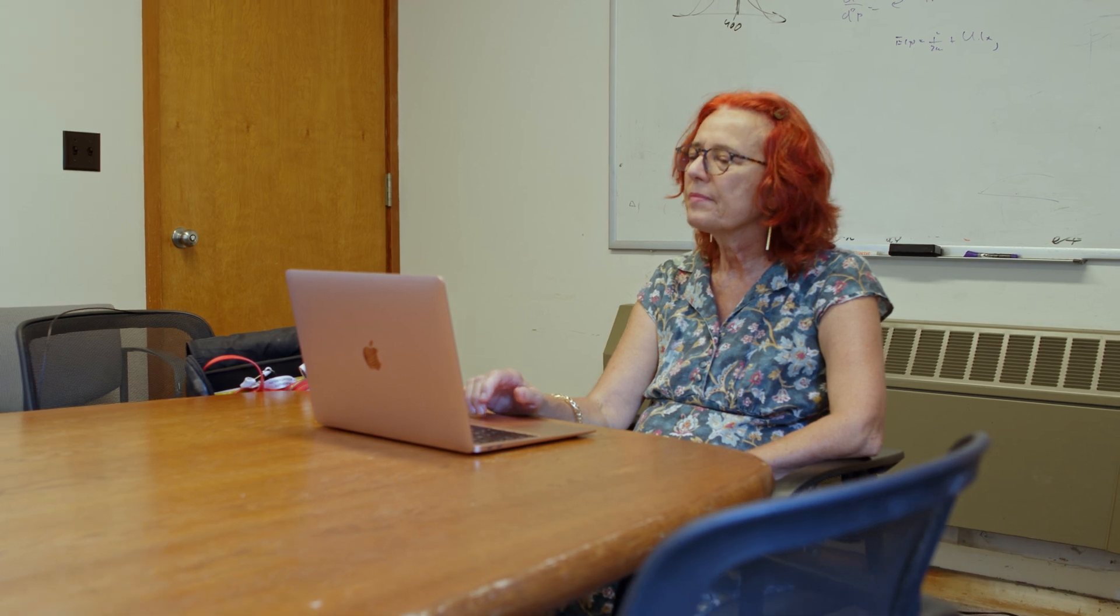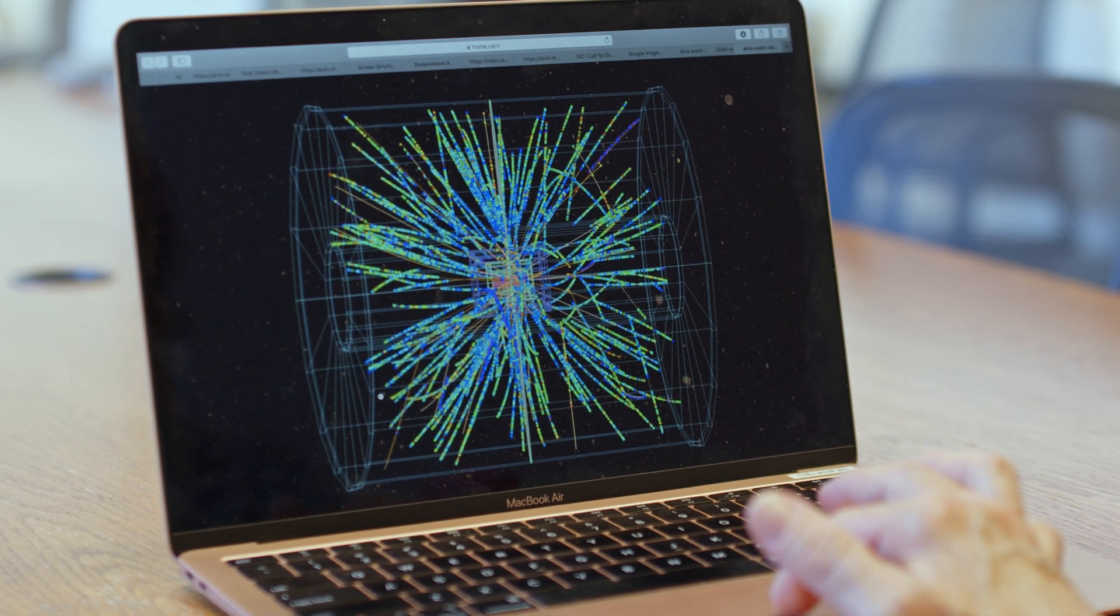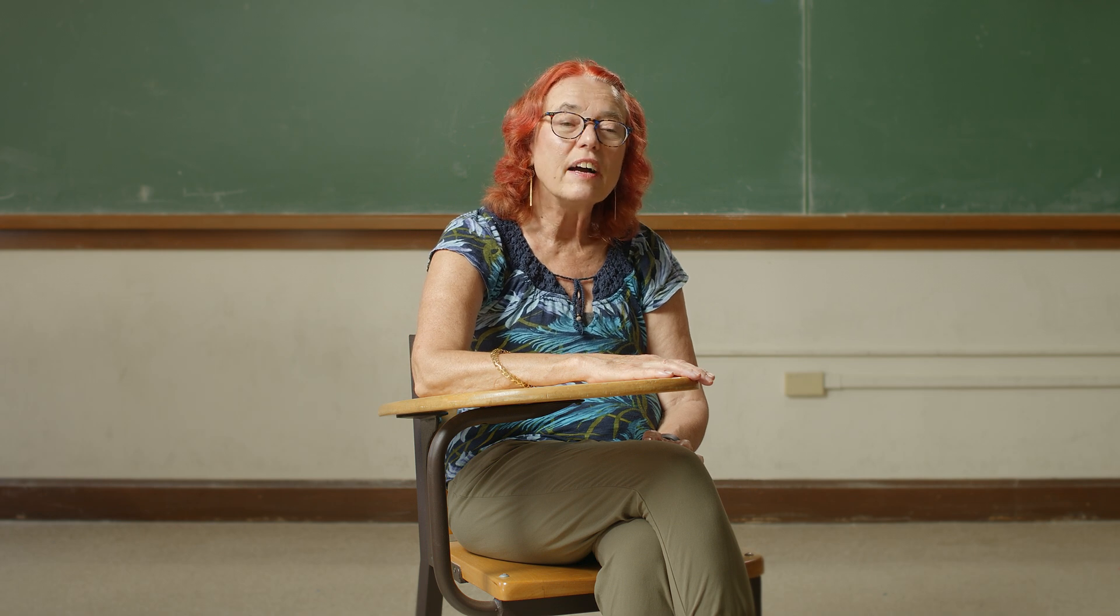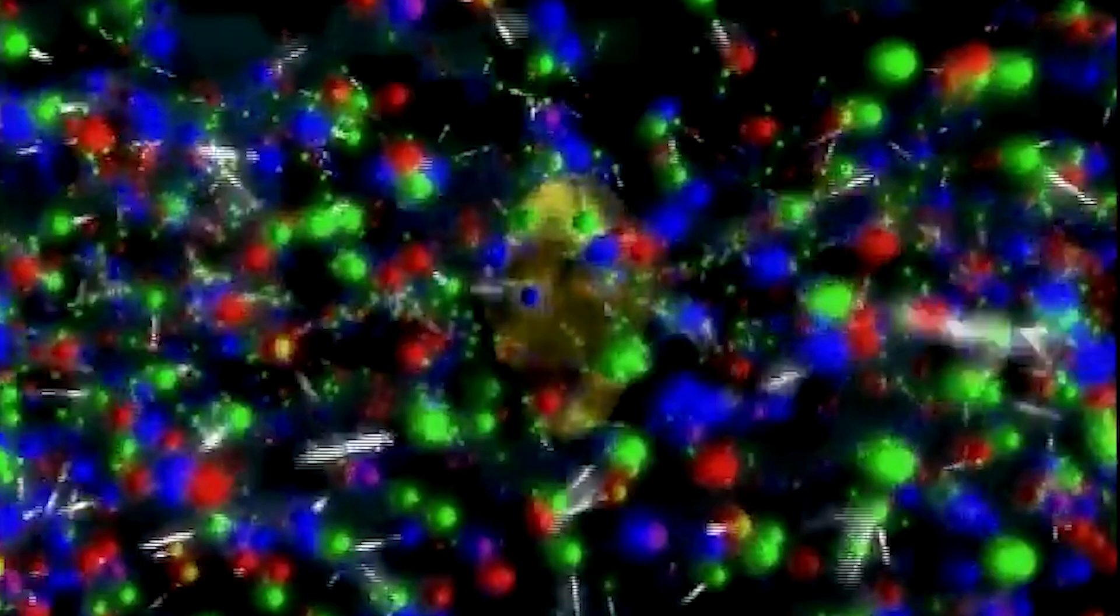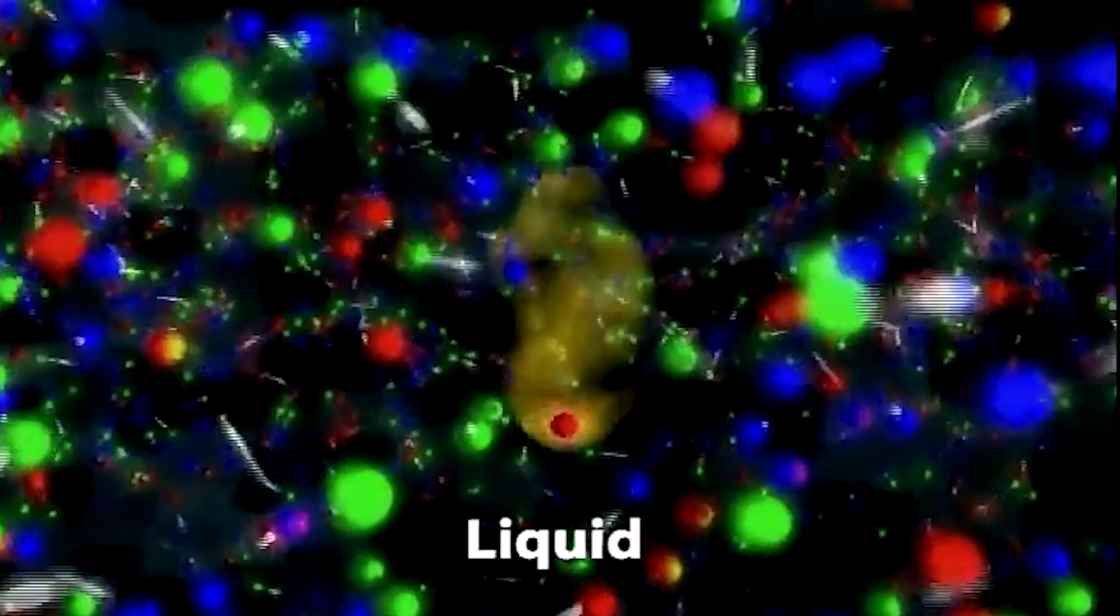The first thing we do is count them and look at the patterns of their emission, and from that we can actually figure out the properties of the quark-gluon plasma. We were absolutely astounded to find that it flows beautifully, like it had no internal friction whatsoever. And that's why when we first discovered it, we called it a perfect liquid.